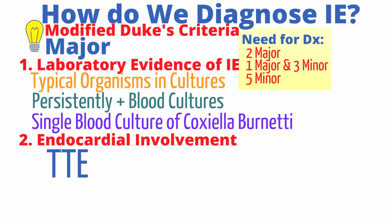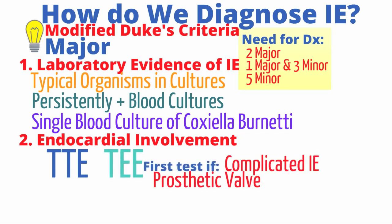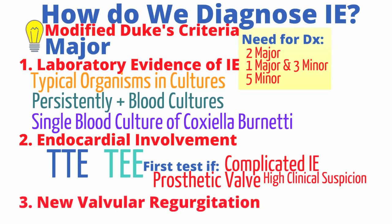For an uncomplicated case with no abscess and no prosthetic valve, proceed with a transthoracic echocardiogram — an echo of the heart obtained by applying gel to the chest and performing an ultrasound. In patients with a complicated course, a prosthetic valve, or extremely high clinical suspicion, proceed to a transesophageal echocardiogram (TEE), which is done by placing the ultrasound probe within the esophagus to look at the heart. The third major criterion is having a new valvular regurgitation.